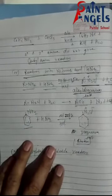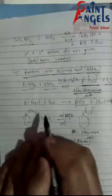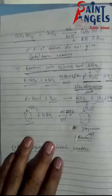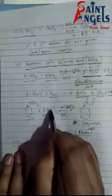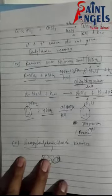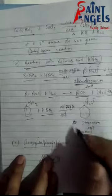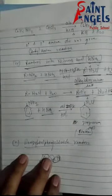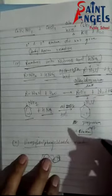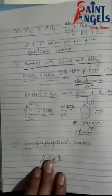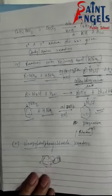The alkyl diazonium salt formed is unstable. The aliphatic diazonium salt reacts with water to form alcohol, and N₂ gas and HCl are released as byproducts. However, when aromatic amines react with HNO₂ at 273K in the presence of HCl, they give aromatic diazonium salt, which is stable. The reason is that aromatic diazonium salt undergoes resonance stabilization — the charge is delocalized through resonance. That is why aromatic diazonium salt is stable, while aliphatic diazonium salt is unstable.